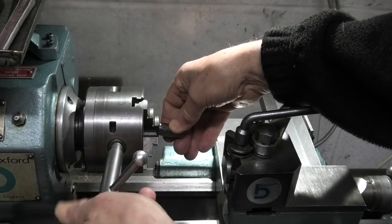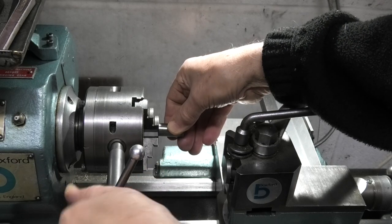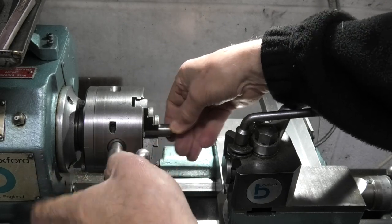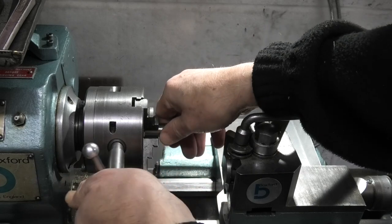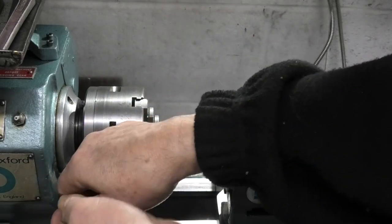What I'm doing is just placing a piece of bar in the chuck jaws so I can put a dial indicator against it.